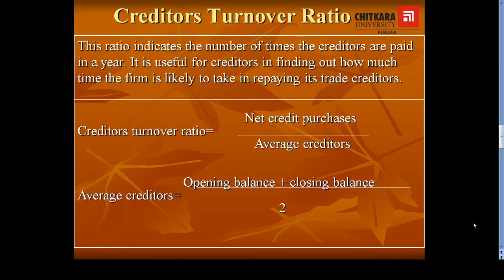Net credit purchases will be calculated by subtracting cash purchases from net purchases. And average creditors will be calculated by adding the opening balance of creditors and closing balance of creditors, divided by 2. In this manner we will get our Creditors Turnover Ratio. This ratio is useful for creditors in finding out how much time the firm is likely to take in repaying its trade creditors.